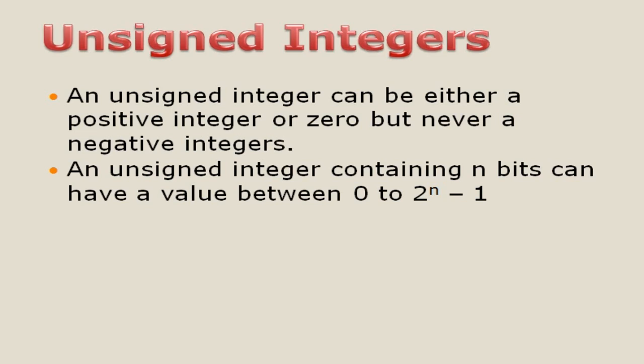If it is a negative value with a minus sign, then it is not an unsigned integer. An unsigned integer containing n bits can have a value between 0 to 2 to the power n minus 1 — so this is the range. For example, if you take an 8-bit number, 2 to the power 8 is 256, so 256 minus 1 is 255, meaning the range is 0 to 255.